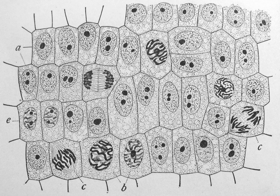Organisms can be classified as unicellular, consisting of a single cell including bacteria, or multicellular. While the number of cells in plants and animals varies from species to species, humans contain more than 10 trillion cells.